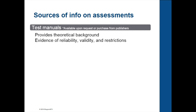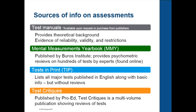So where do you go to find information on assessments? I list four major sources here. The test manual is associated with every commercially available assessment and basically gives you a summary of what the assessment is about along with some reliability and validity evidence — you can contact the publisher to obtain a copy. The second one, the Mental Measurements Yearbook, is a document published by the Buros Institute. It's probably one of the most comprehensive listings of commercially available assessments out there. It provides psychometric reviews — meaning reliability and validity data, sample characteristics, and more — on hundreds of assessments, written by test experts, so it's highly credible.